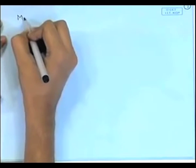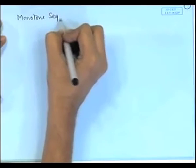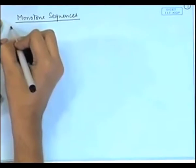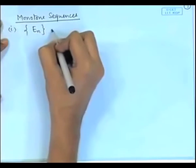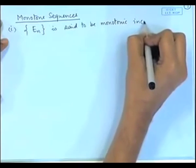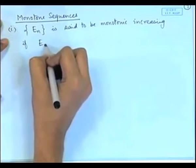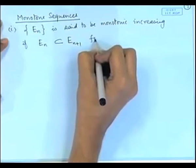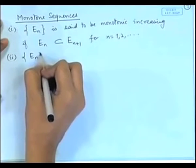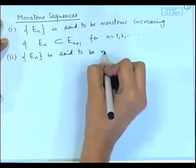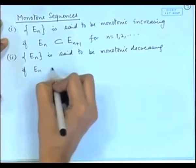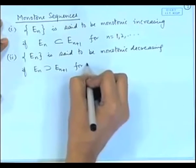They are called monotone sequences. We say that a sequence E_n is said to be monotonic increasing if E_n is a subset of E_{n+1} for n equal to 1, 2, and so on. In a similar way, we define E_n to be monotonic decreasing if E_n is containing E_{n+1} for n equal to 1, 2, and so on.